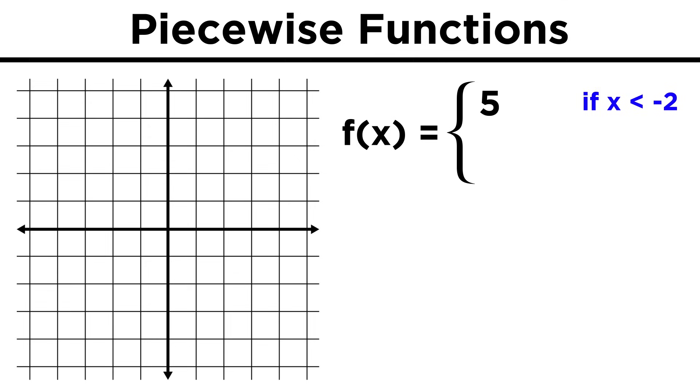For example, we can have a function that is equal to five when x is less than negative two, and equal to x minus one, when x is greater than or equal to negative two. That would mean that all the way from negative infinity, the function will be equal to five. So that's this horizontal line leading all the way up to the point negative two, five, with an open circle, meaning that this point is not included.